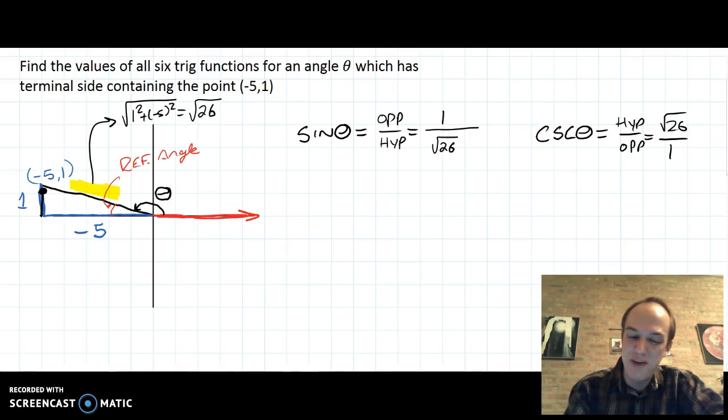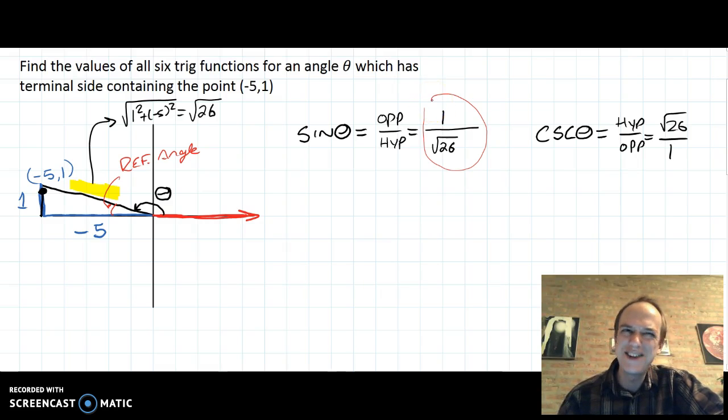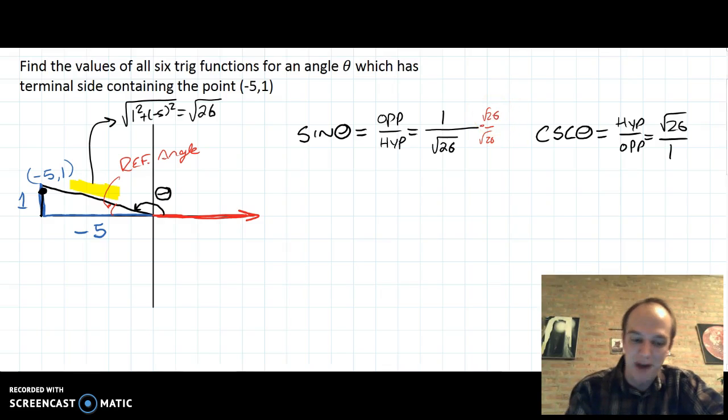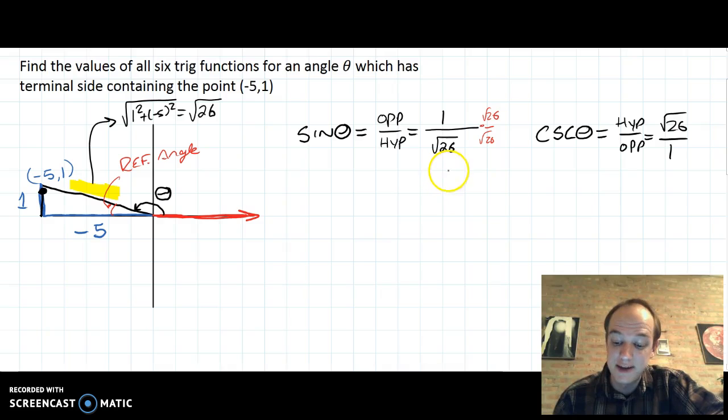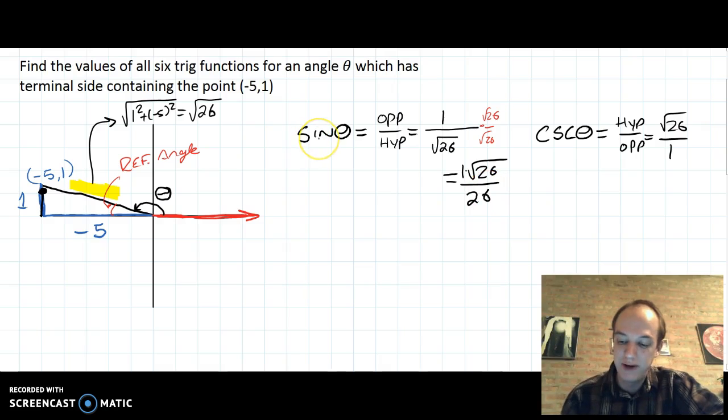Now that I've done the cosecant, I'm actually going to circle back to sine because my final answer for sine is not beautiful. I need to rationalize this. So I can rationalize it by multiplying by the square root of 26 over the square root of 26. And my beautiful mathematically perfect and conventional final answer for sine of theta is going to be the square root of 26 divided by 26. All right, we have sine, we have cosecant.